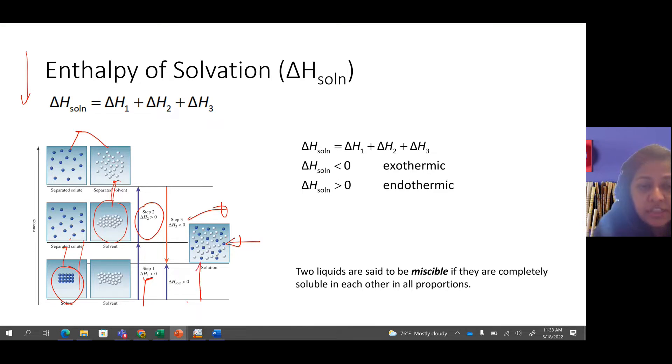The delta H, the enthalpy of solvation, is an addition of all three energy processes: delta H1, delta H2, and delta H3. If the delta H solvation is less than zero, the entire process is exothermic. If it is greater than zero, then the net energy is endothermic.